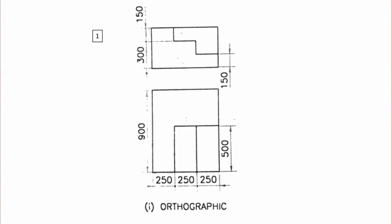This is the front view and the top view, along with their dimensions. This is the 3D view and isometric view. If you are using the isometric view, this is the correct dimension. This is the isometric length and scale, and this is the correct dimension.